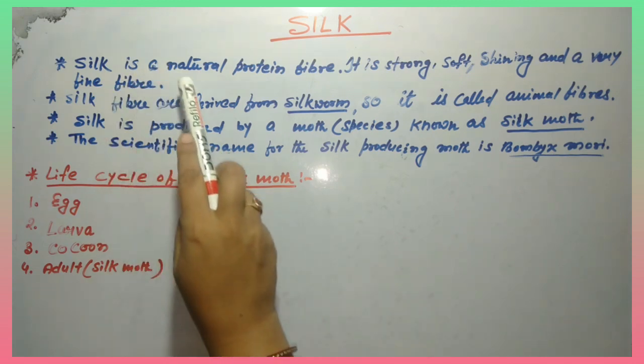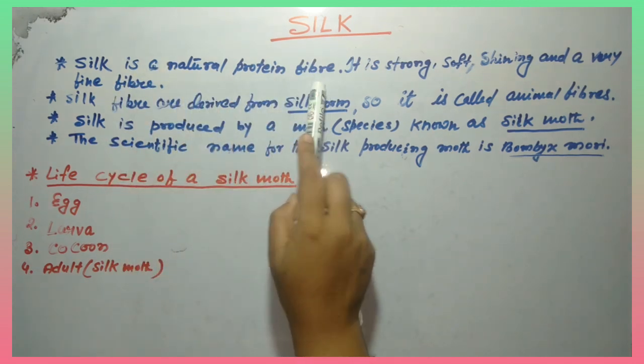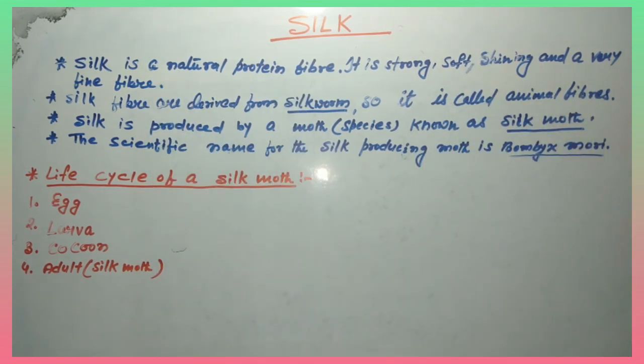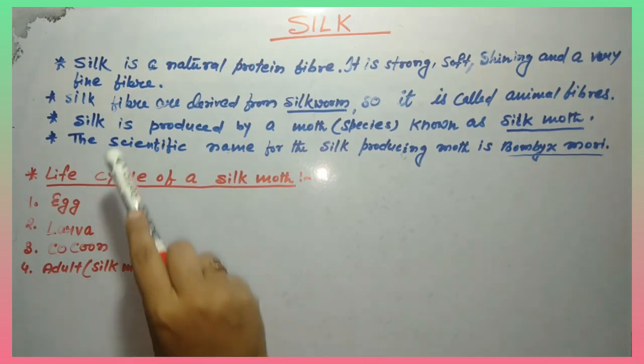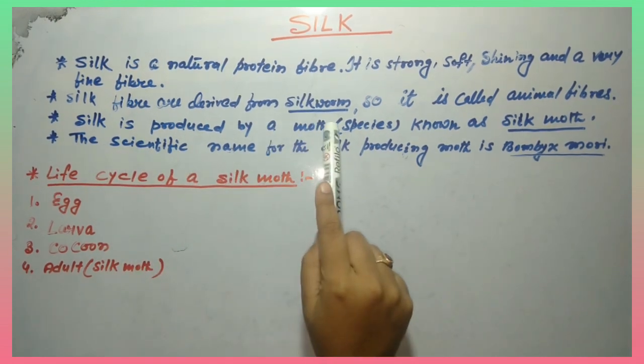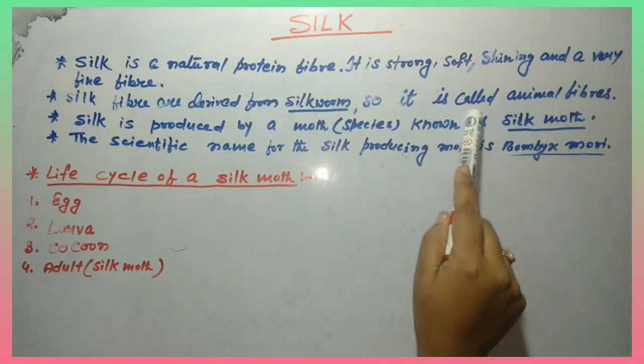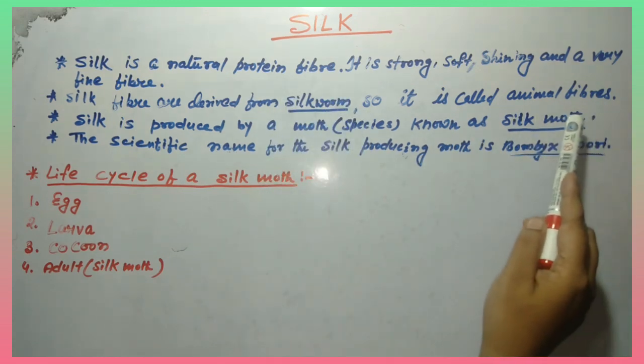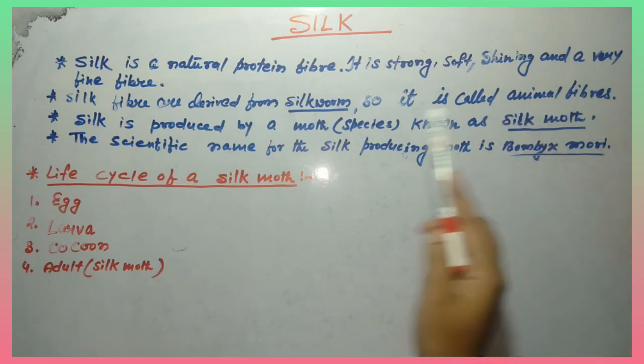First of all, what is silk? Silk is a natural protein fiber. It is strong, soft, shiny and very fine fibers. Silk fibers are derived from silkworm, so it is called animal fibers. Because silkworm is animal, so silk is what is called animal fiber.